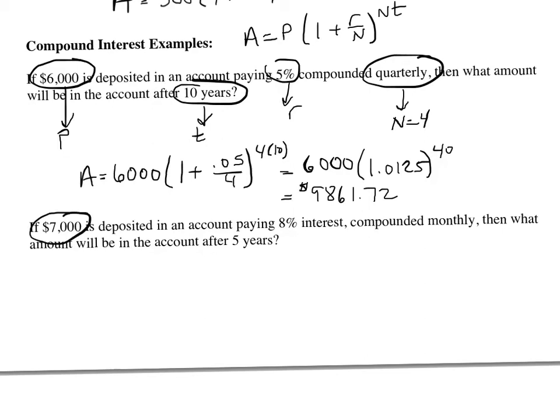Next problem. $7,000, the principal, is deposited in an account paying 8% interest, your interest rate. Compounded monthly, which means N is going to equal 12.